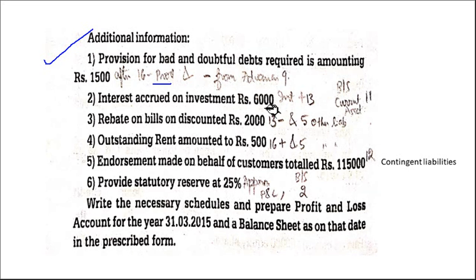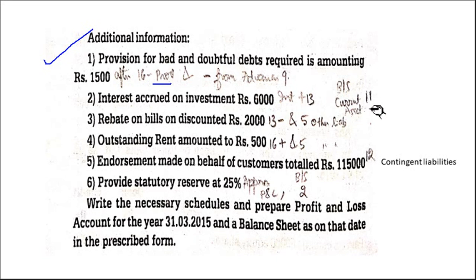Second adjustment: interest accrued on investment — that means interest due but not received, outstanding interest receivable. We have invested and we are supposed to receive the interest but have not received it. So in interest earned, Schedule 13, we have to write this. And in the balance sheet, Schedule 11, other assets — because we are writing all current assets under Schedule 11. Under fixed assets we can't write it, so we write it under other assets, Schedule 11.